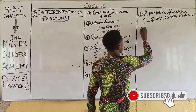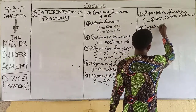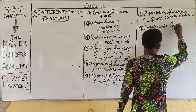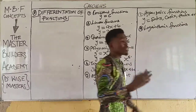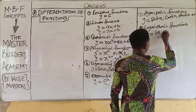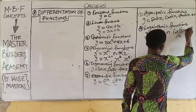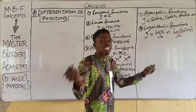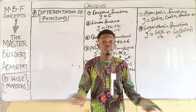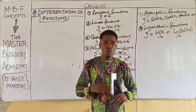Then we have logarithmic functions. For logarithmic functions, this is where you have y = log base b of x, or perhaps log of (3x² + something). These are logarithmic functions. The base b can be any value — it can be 3, 4, 2, 10 — as the case may be. These are examples of logarithmic functions.